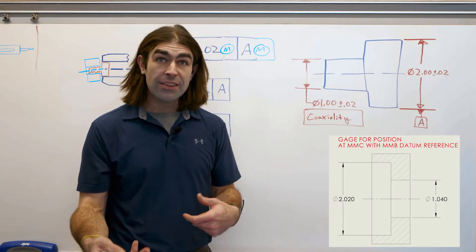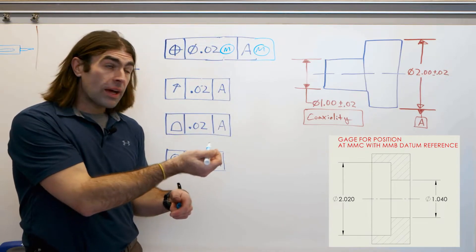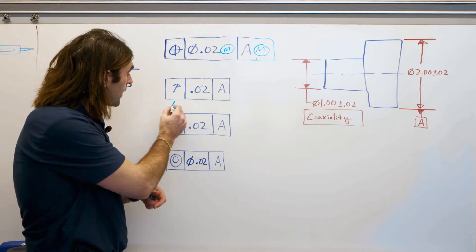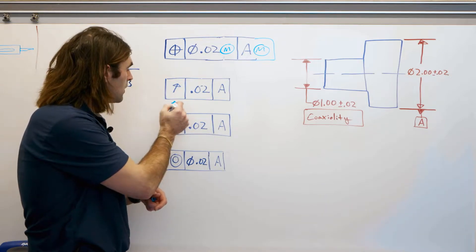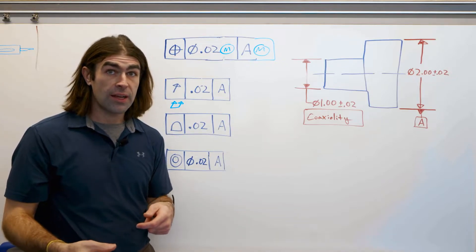So the next tolerance we'll look at is run out. So there's two kinds of run out. This is circular run out. Total run out looks like this. Run out is a very different tolerance than position.